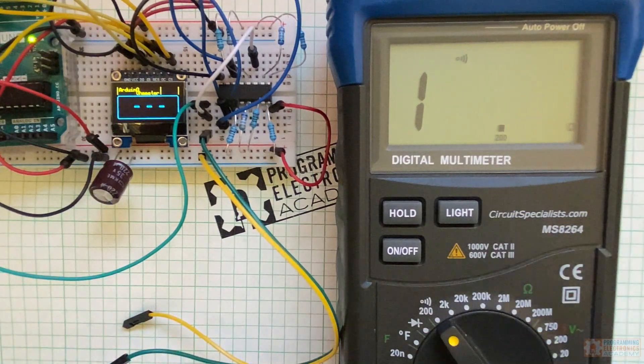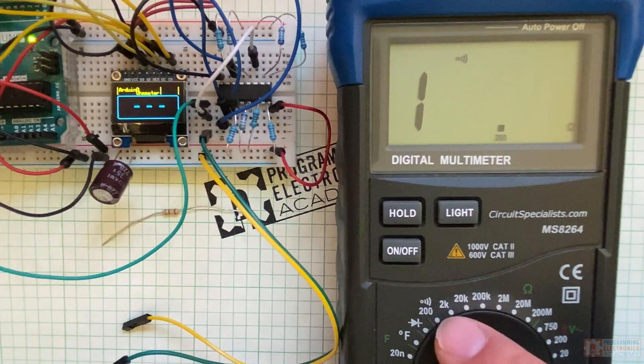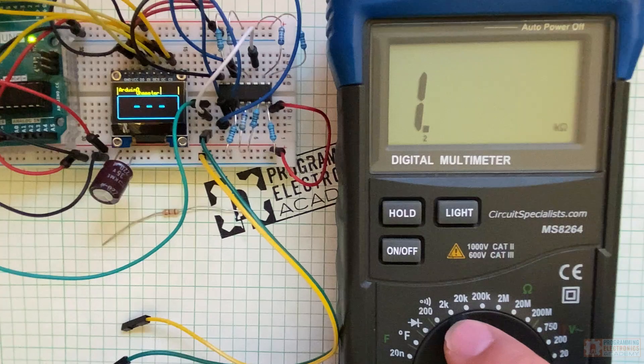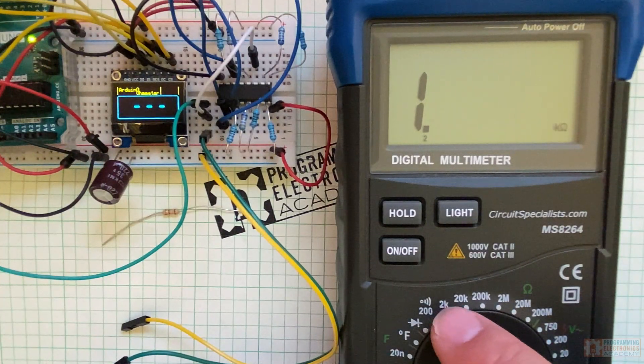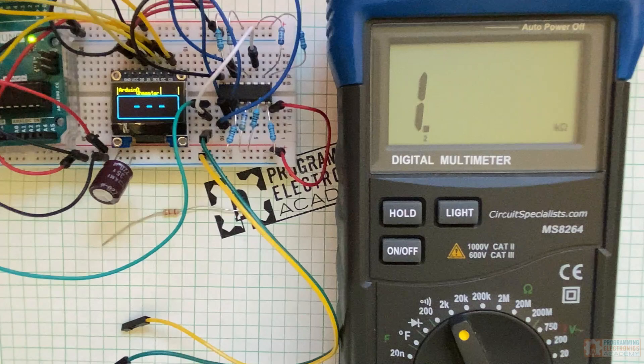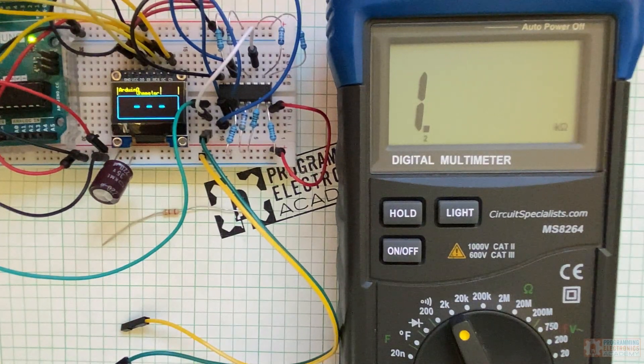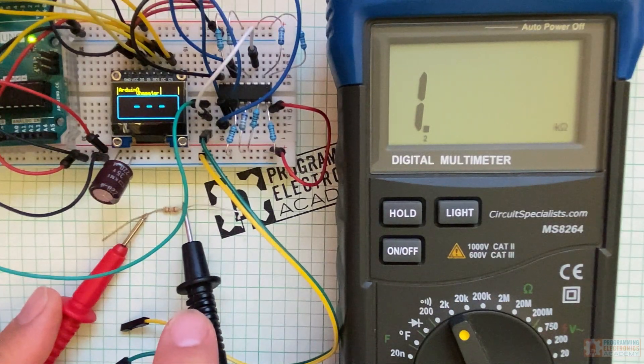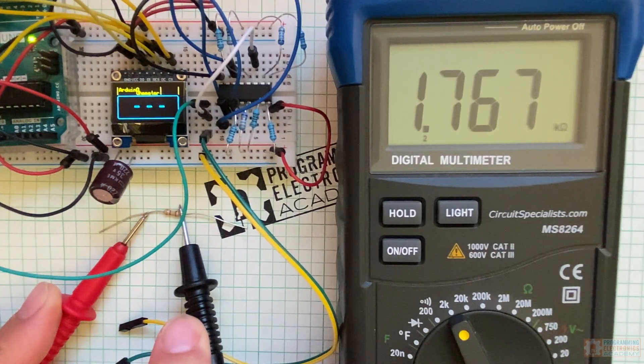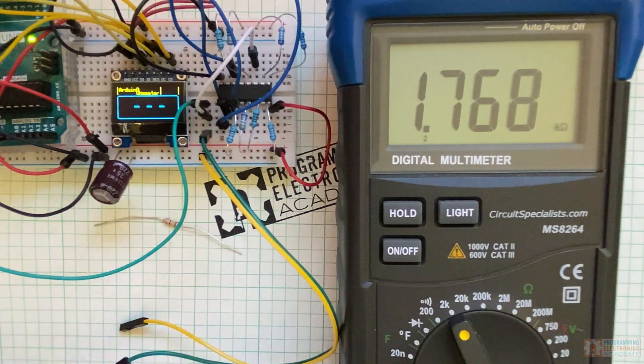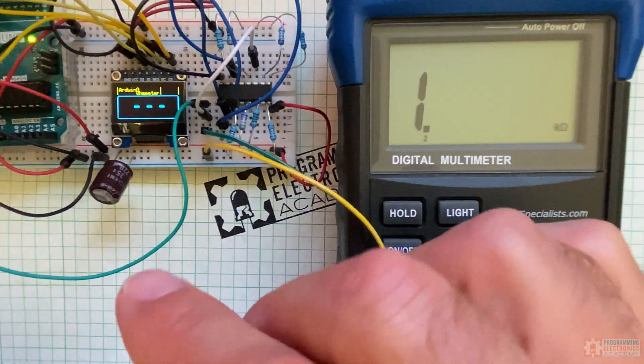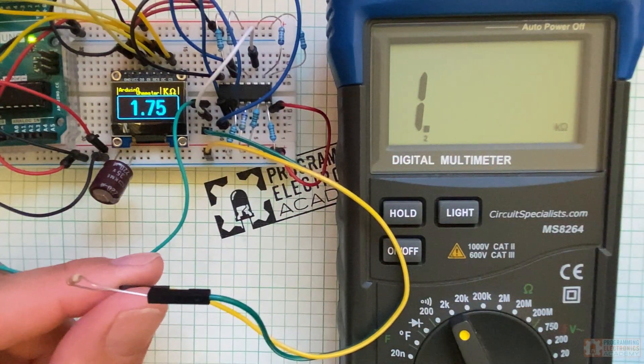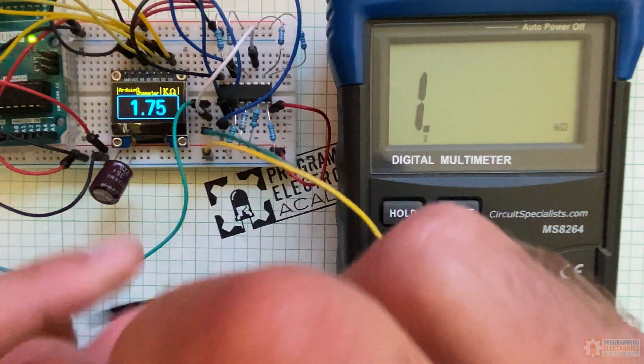I'm going to go to a 1.8 kiloohm right here. Now I need to change the adjustment here. I'm going to go to 2K. So now I should be able to measure up to 2K. Since this is 1.8K, I should be okay. Sometimes this cheap multimeter, though, gives me trouble. 1.768. Let's try the Arduino meter. 1.75. Man, it's pretty good.